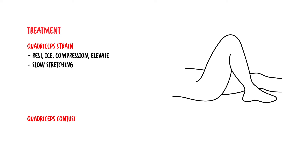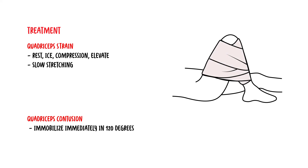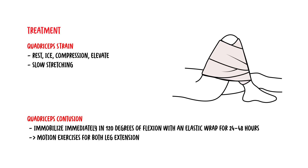Treatment of quadriceps contusion is similar, with rest, ice, and compression. However, it is important to immobilize the area immediately in 120 degrees of flexion with an elastic wrap. This should be kept for about 24 to 48 hours. Following this period, motion exercises for both leg extension and hip flexion should be performed several times daily within a range of movement that does not cause pain.